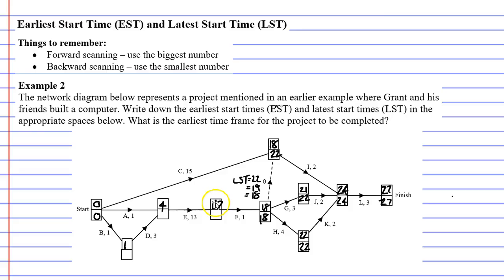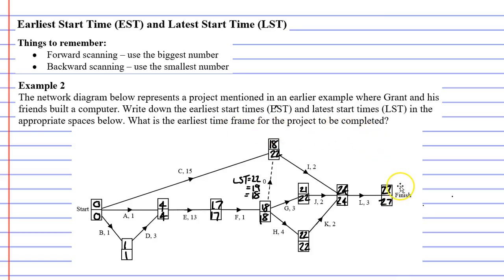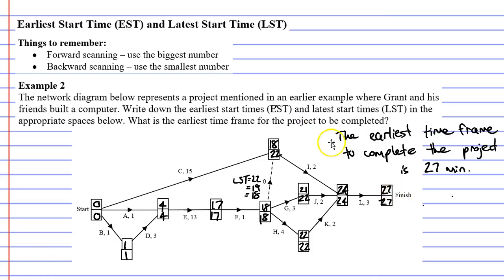Looking at the next vertex, 18 minus 1 is 17, so our latest start time is 17. Then 17 minus 13 is 4, so our latest start time is 4. And 4 minus 3 gives us 1. The start vertex always has a latest start time of 0. We have now written down all our earliest start times and latest start times. The earliest time frame to complete the project is 27 minutes.